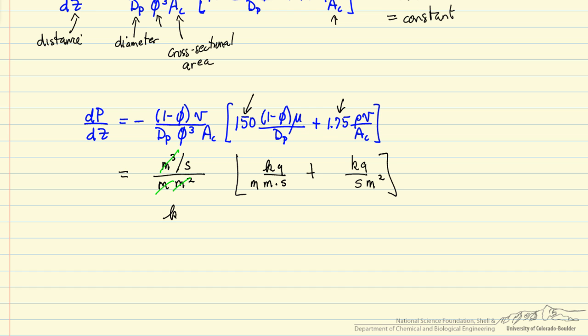On the right side of the equation, we have kilograms per meter squared per second squared. And in SI units on the left side, pascals and meters.